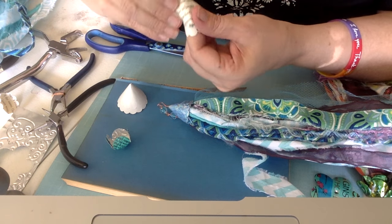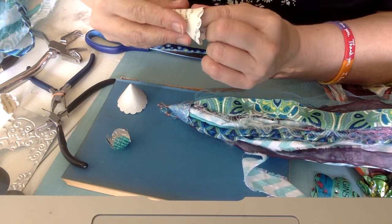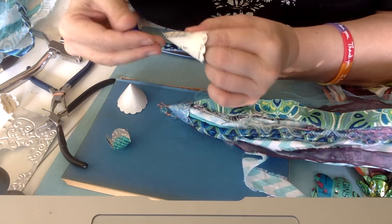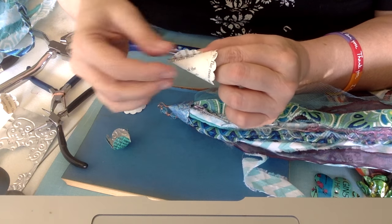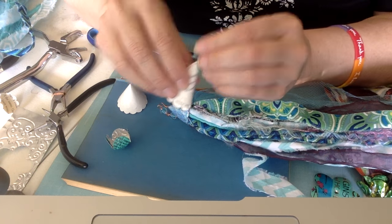And then once you get to the size cone that you think is going to cover your beads or cover your wire wrapping, then what you would do is take your white glue or your glue stick, glue stick this down until you have a cone, let it dry. Then you're going to get to this part.